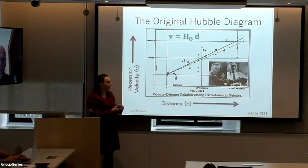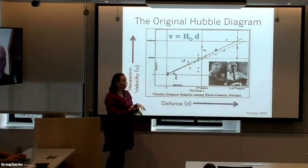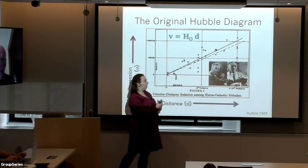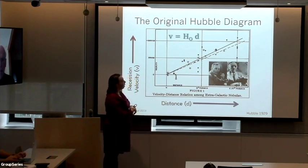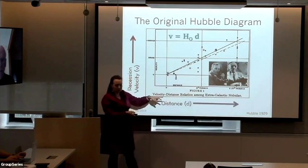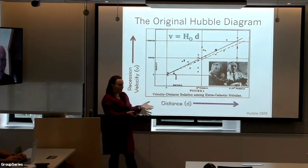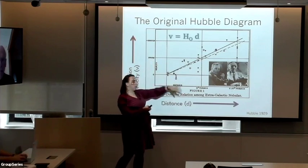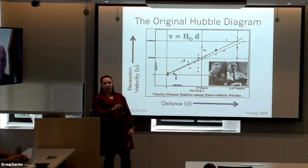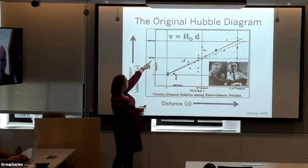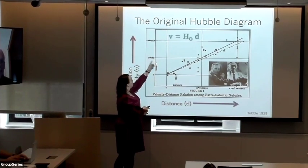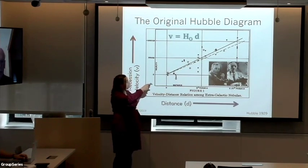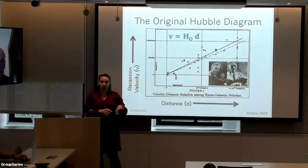Let's go back to 1929 and the original Hubble diagram, which postulated the redshift-distance relation—which Hubble called it because he didn't like to interpret his findings. He plotted distances derived using Cepheid-type variables following the Leavitt law discovered by Henrietta Leavitt in 1908 and 1912, against recessional velocities measured by Slipher at Lowell Observatory—not by Hubble himself. The constant of proportionality between velocity and distance is H-naught, the Hubble constant. It's defined locally—that's important to keep in mind.